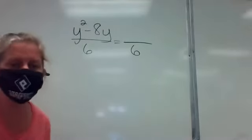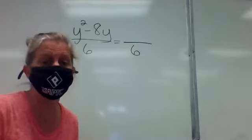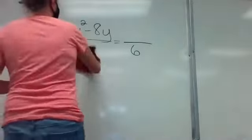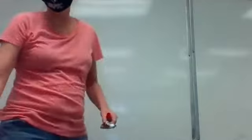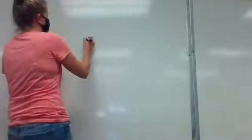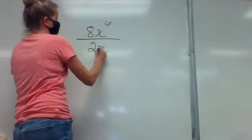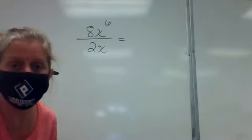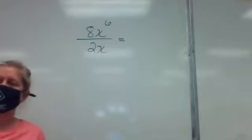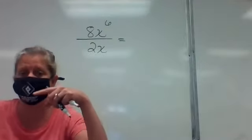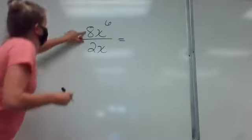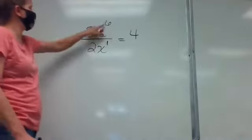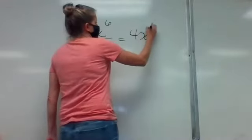The rest of the problems say 'write the expression in lowest terms' or 'simplify the expression' — those mean the same thing. Number 10: you have 8x to the sixth over 2x. You divide 8 by 2 and subtract the exponents on x. Eight divided by two is 4, and x to the sixth over x to the first means you subtract to get x to the fifth. So the answer is 4x to the fifth.